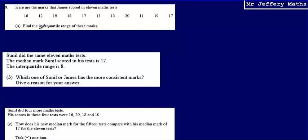In order to find the interquartile range, what we're going to have to do is work out the difference between the upper quartile and the lower quartile. So we can write this as the upper quartile subtract the lower quartile.